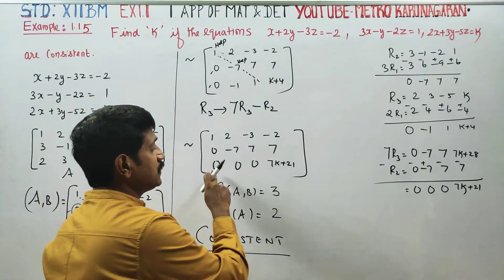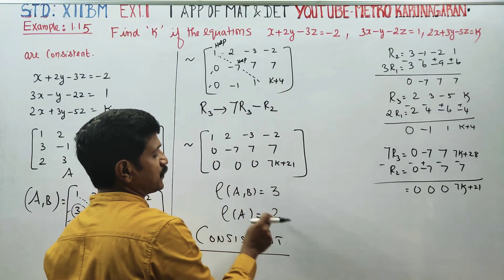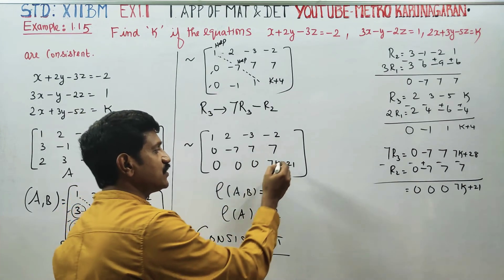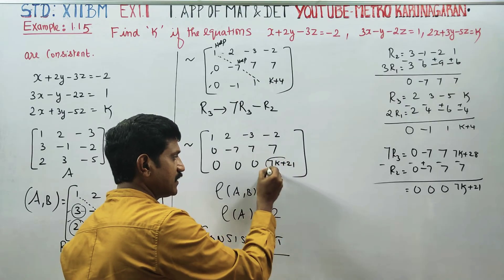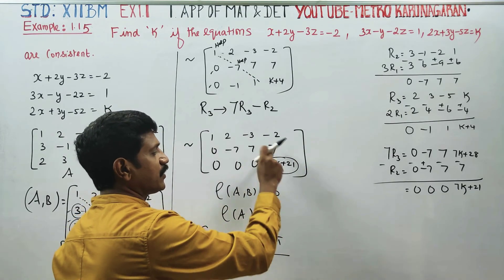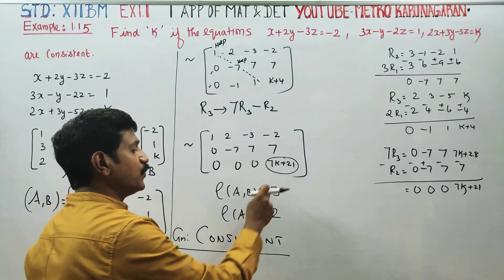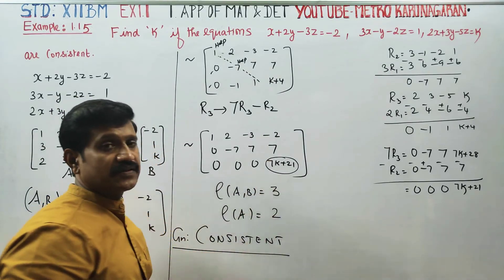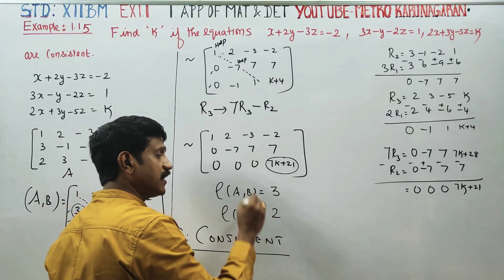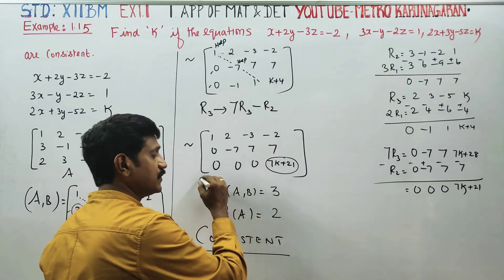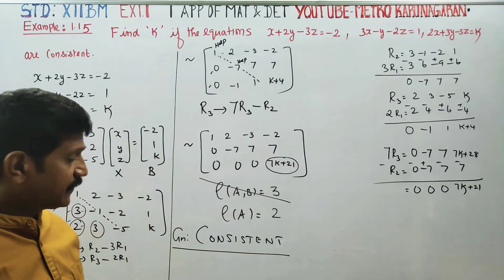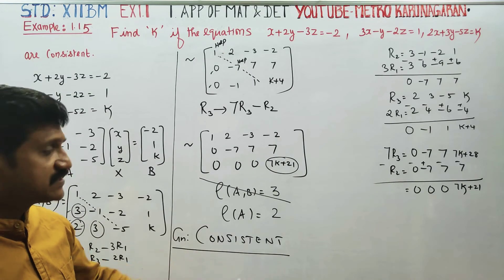The rank of the augmented matrix [A,B] is 3, but the rank of A is 2. For the system to be consistent, rank of A must equal rank of [A,B]. Here rank of A equals 2 and rank of [A,B] equals 2, so both must match for consistency.